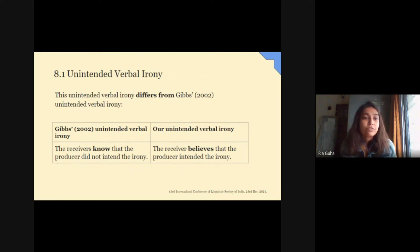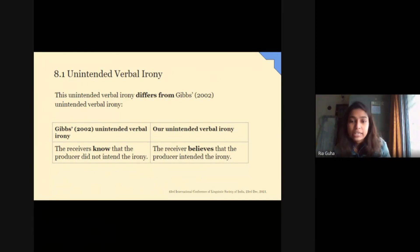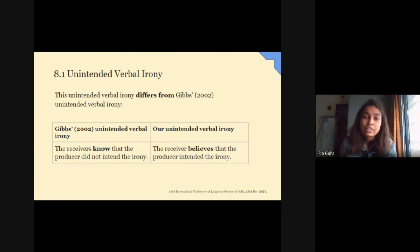Then how is it different from Gibbs's unintended irony? In case of Gibbs, the receivers know that the producer did not intend the irony. It was rather the situation which made it an ironic occurrence. But in our unintended irony, the receiver believes that the producer intended the irony. It's another fact that in the communication, the producer later disavows it. It's another fact that at a point of time, the receiver believes that the producer intended it as irony. So our unintended verbal irony is from the receiver's perspective, whereas Gibbs's unintended verbal irony is unintended from both receiver and producer's perspective.